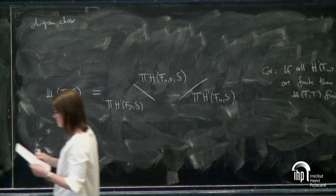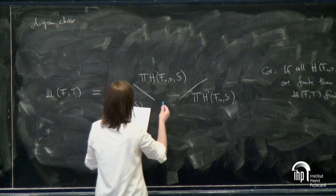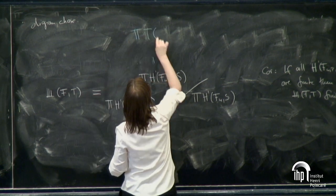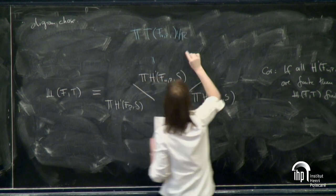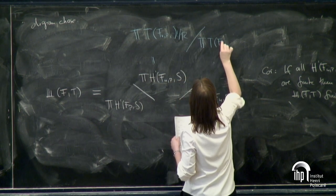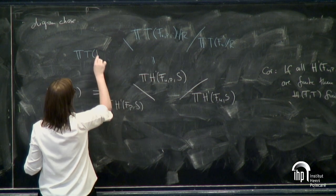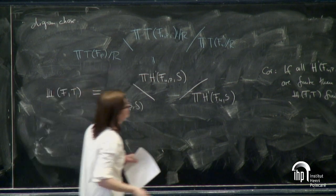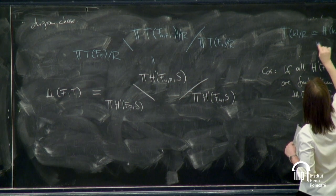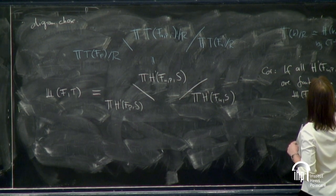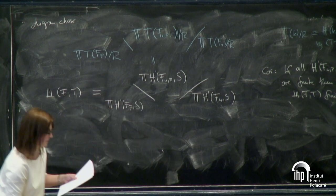Let me also remark that this can be written in terms of R-equivalence: Sha(F,T) equals T(F_{U,p}) mod R, quotiented by the product of T(F_U) mod R and T(F_p) mod R, because T(K) mod R is isomorphic to H^1(K, S) by results of Colliot-Thélène and Sansuc. So if you like R-equivalence, you can phrase things that way.